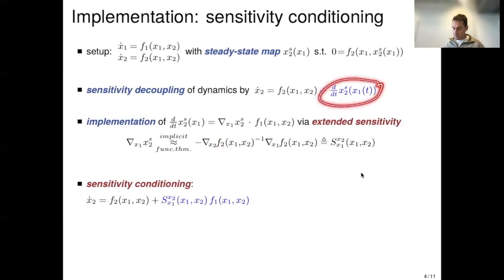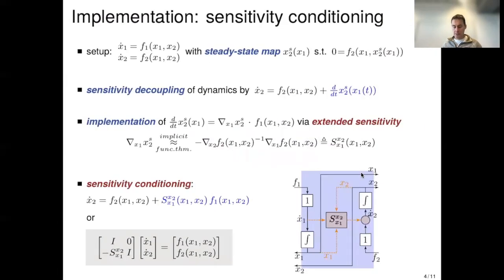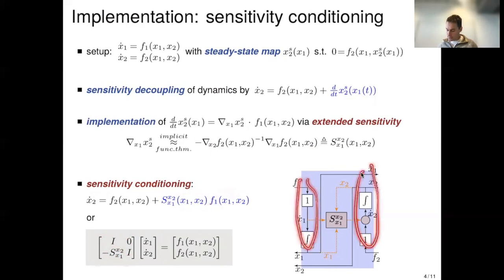In block diagram form: here are the x1 dynamics, here are the x2 dynamics, and what you add is essentially a feed-forward derivative-type term to implement the sensitivity coupling. Before analyzing whether this works, let me return to the motivating example of constrained optimization with the convex-concave Lagrangian.